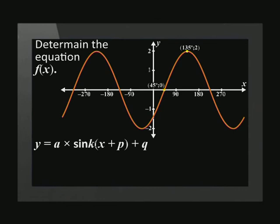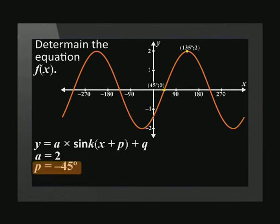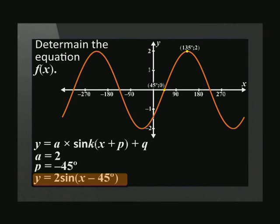Examining the graph in more detail: the period is still 360 degrees and the graph has not moved up or down, but it has been vertically stretched and shifted to the right. This means we need to find the values of a and p. The amplitude is 2, so a equals 2. The graph has shifted 45 degrees to the right, so p equals negative 45 degrees. Substituting these values gives y equals 2 sine (x minus 45 degrees).